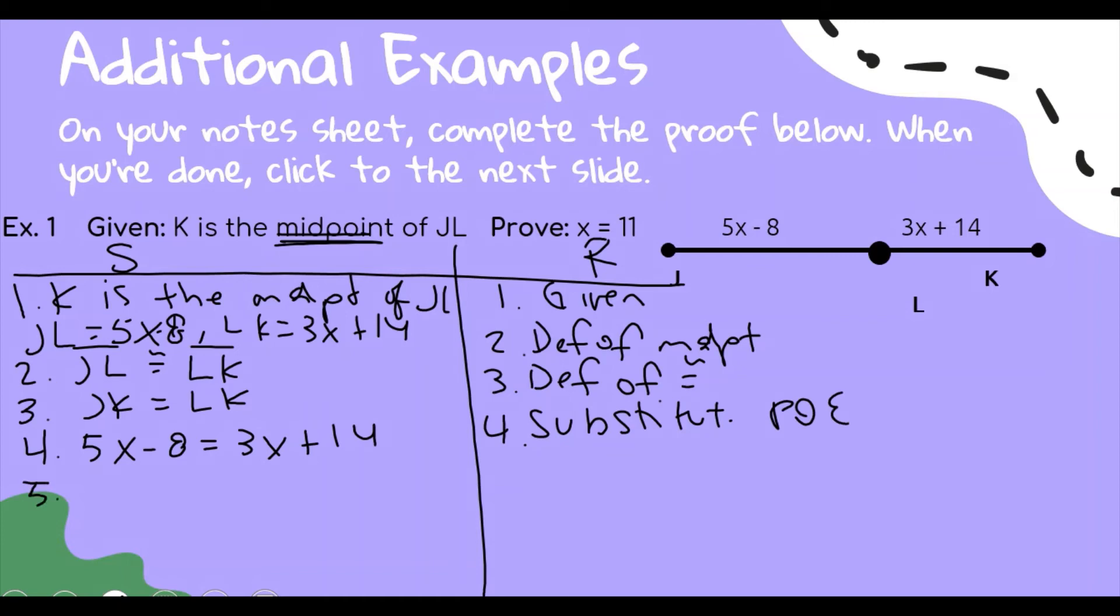And now we can start solving. I'm going to subtract the 3x from both sides, then add an 8 to both sides, and last we'll finish it by dividing both sides by 2, and we get x is equal to 11.